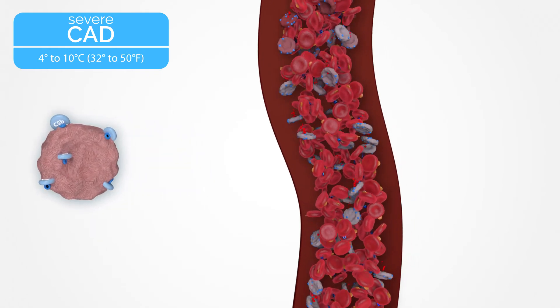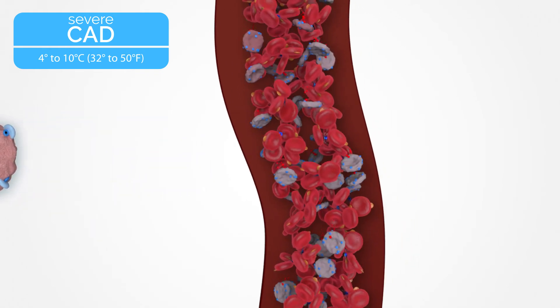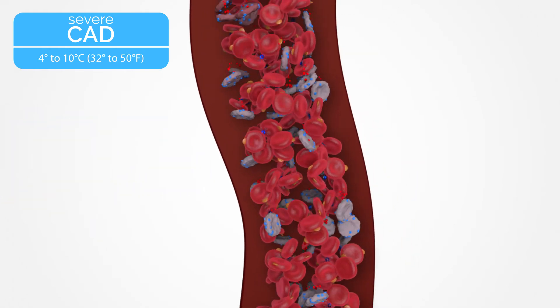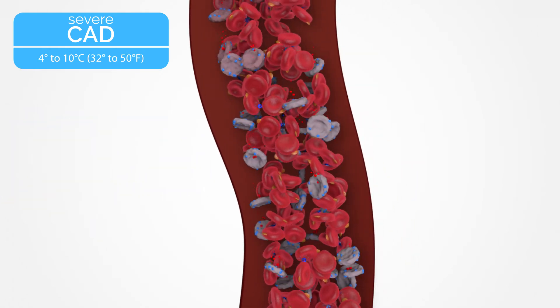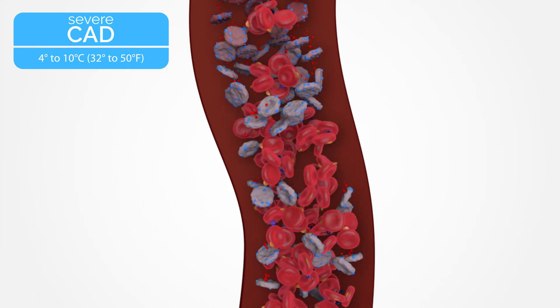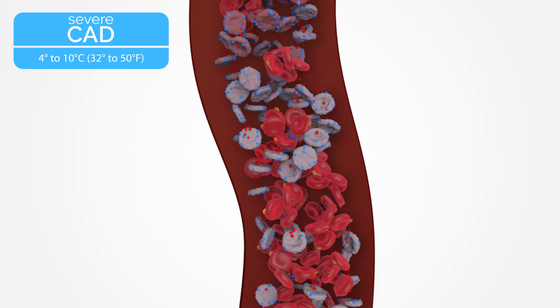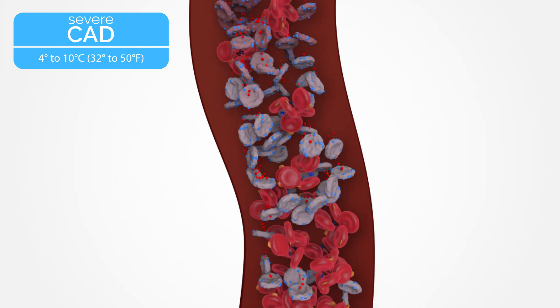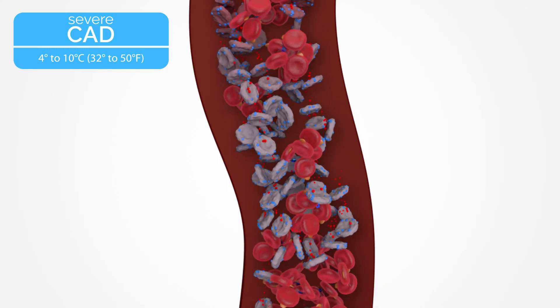In a second hit, hemoglobin from destroyed red blood cells may over-activate the alternative complement pathway, increasing red blood cell destruction.